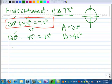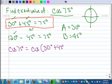So I can rewrite this to say, instead of cosine of 75 degrees, this is cosine of 30 plus 45 degrees.